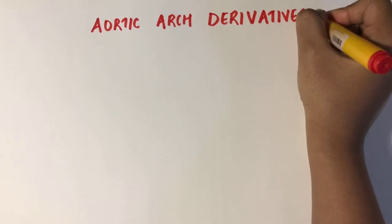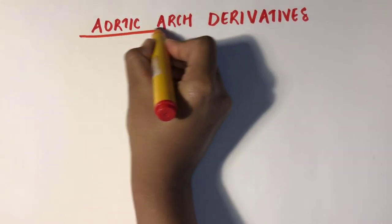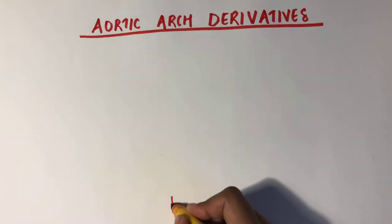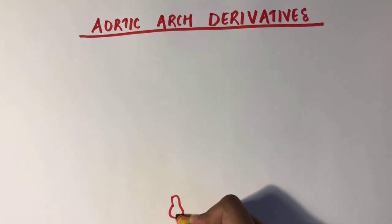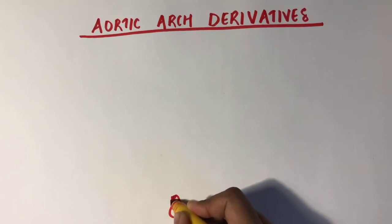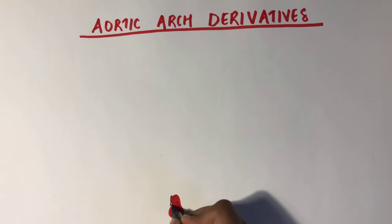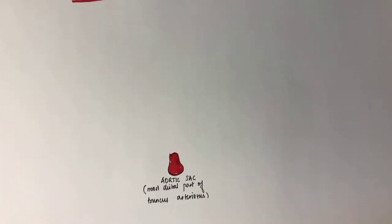The aortic arch arises from the most distal part of the truncus arteriosus, which is called the aortic sac — the red structure you see here.